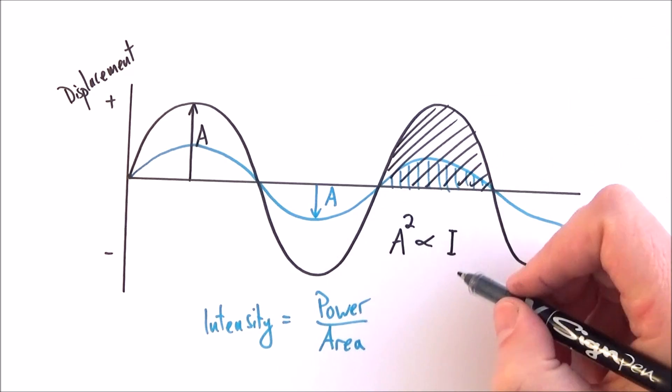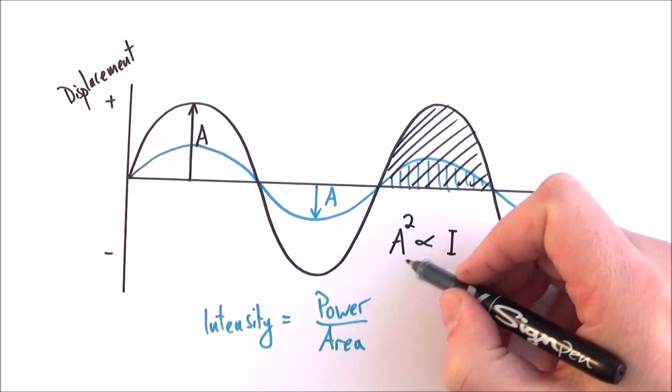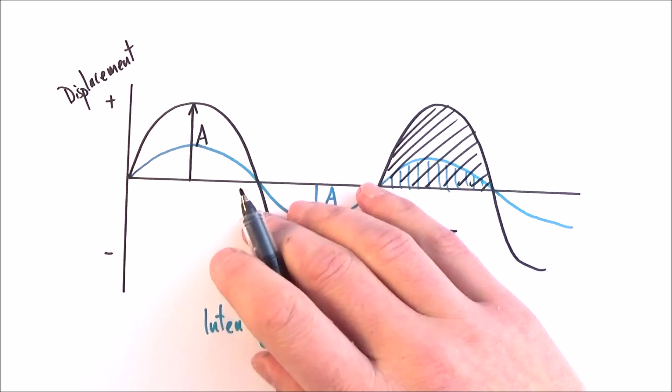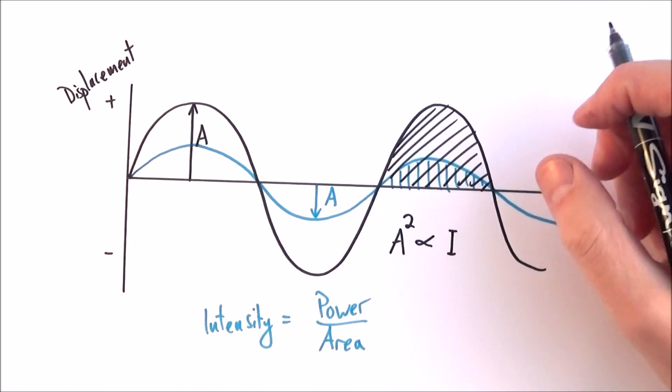And what we can draw from this is that the intensity is proportional to the amplitude squared. It's not just proportional to the height. A wave with double amplitude carries four times as much energy.